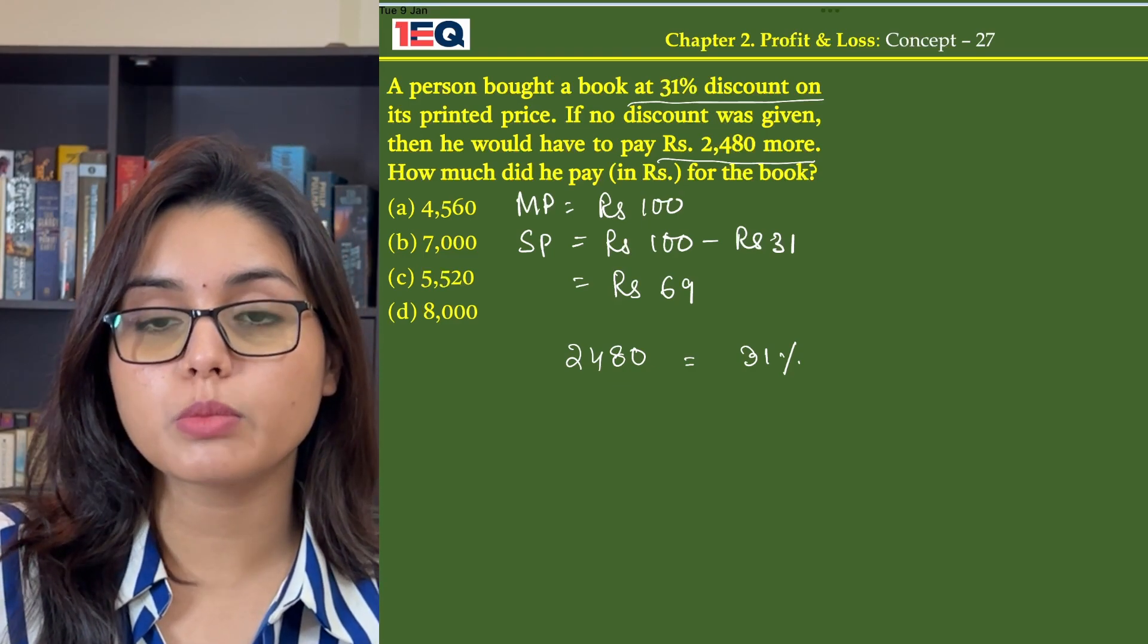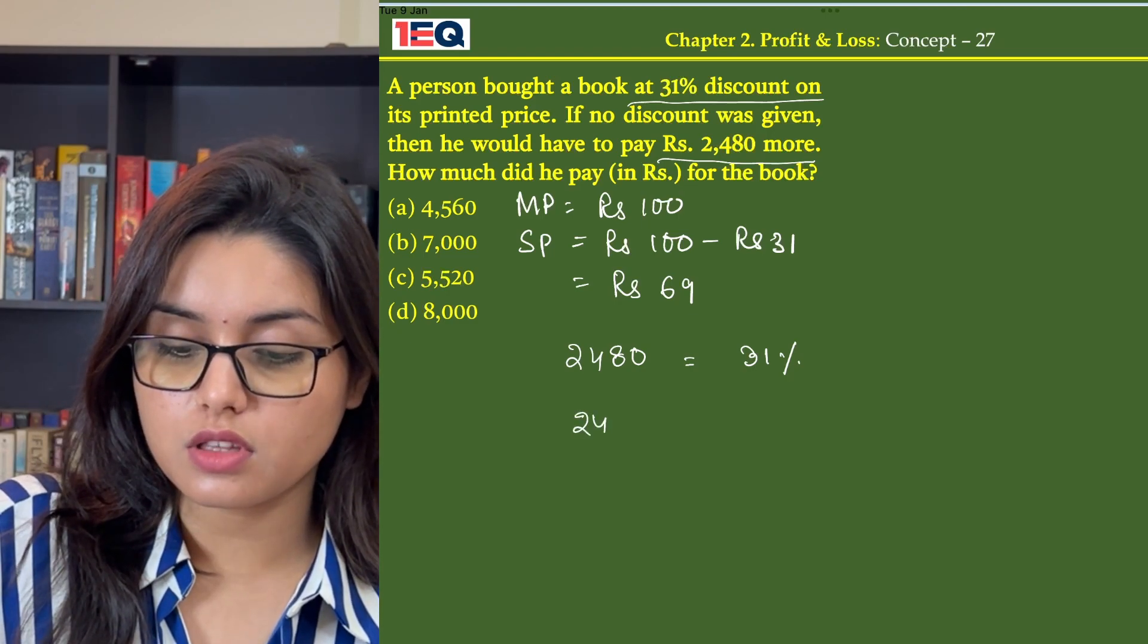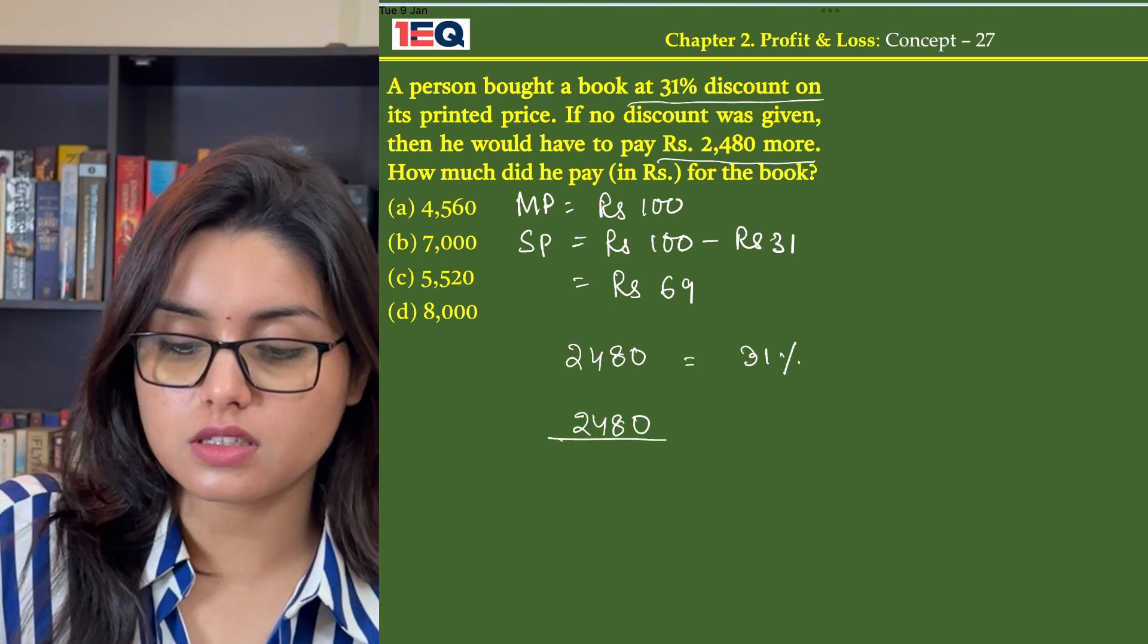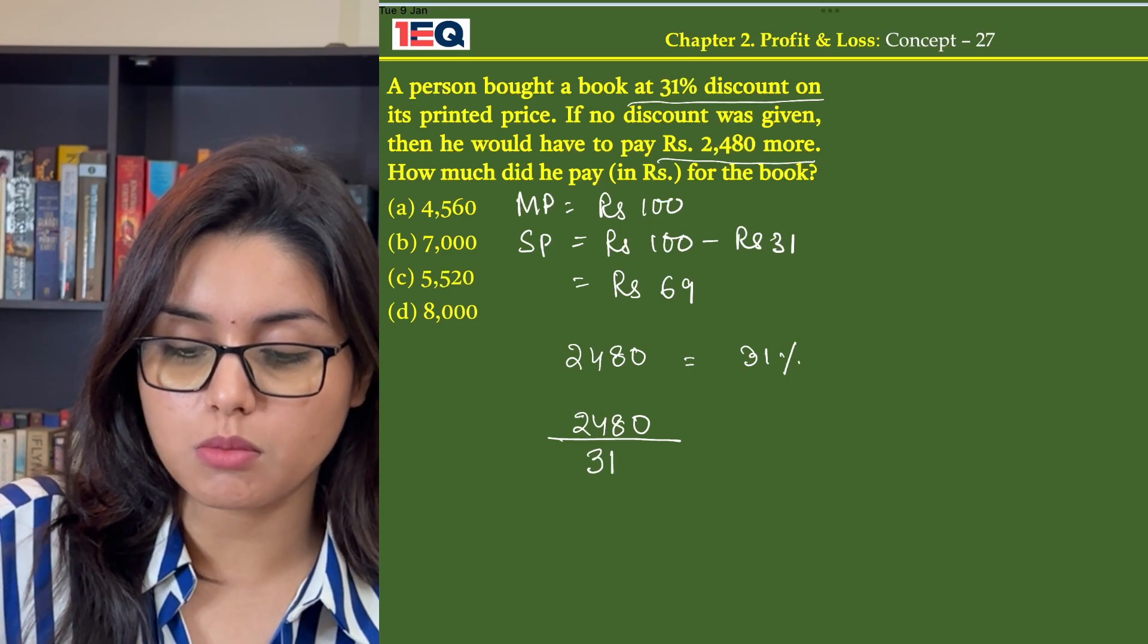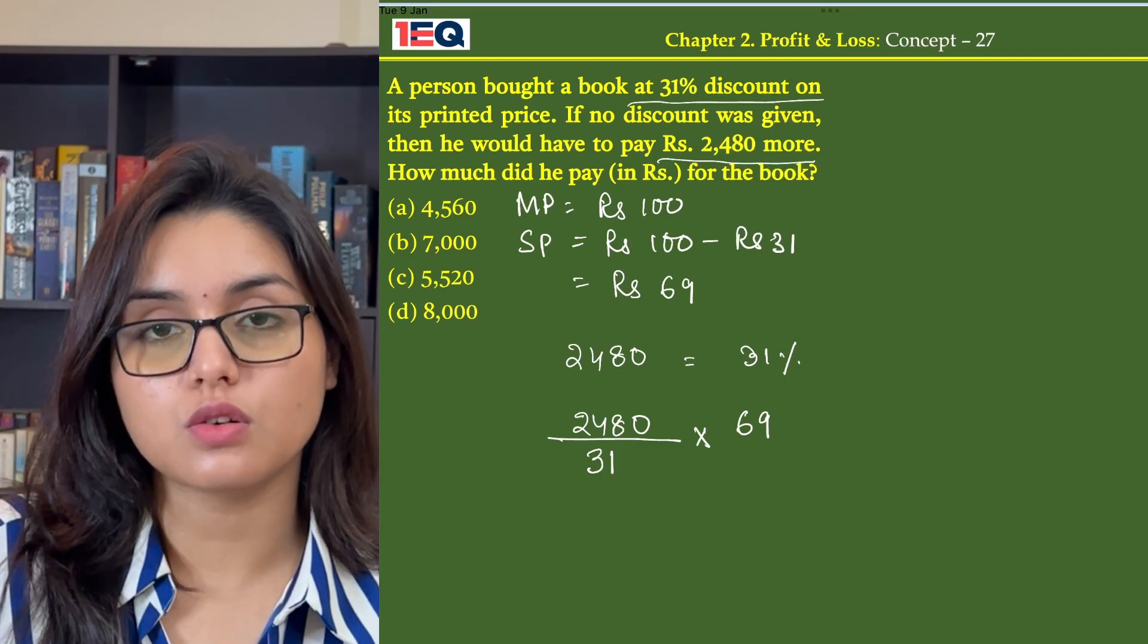So in order to find how much he paid for the book, we will take the extra amount that he pays divided by the discount amount, into the selling price after the discount is given.